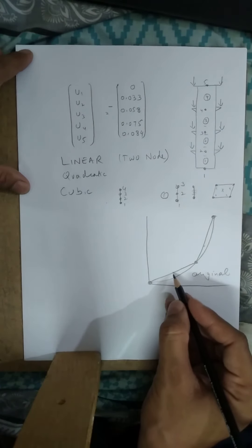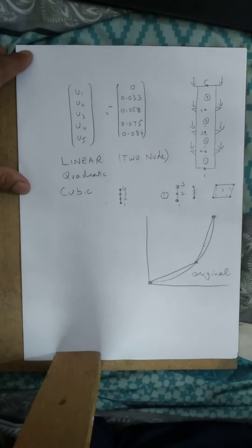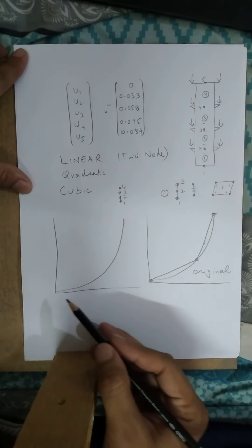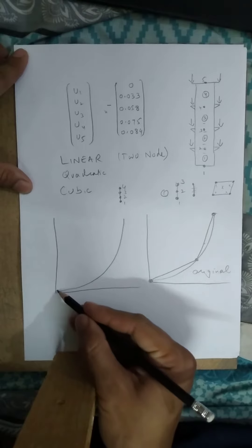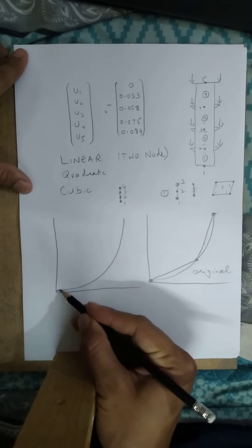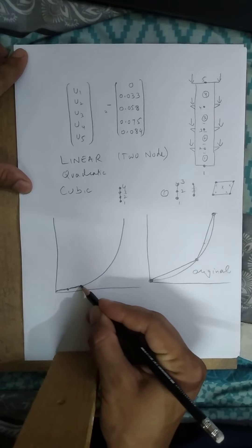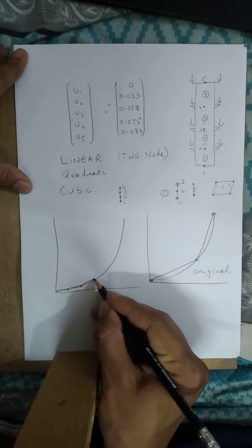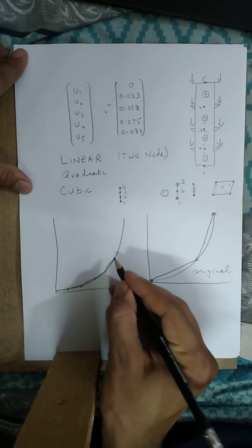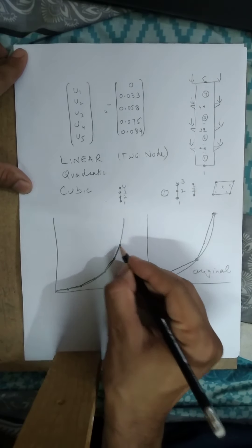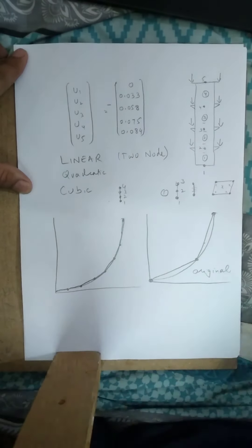If we increase the number of elements — making them smaller — for example, one element, second element, third element, fourth element, five elements — now you can see that the elements are very close to the original curve.